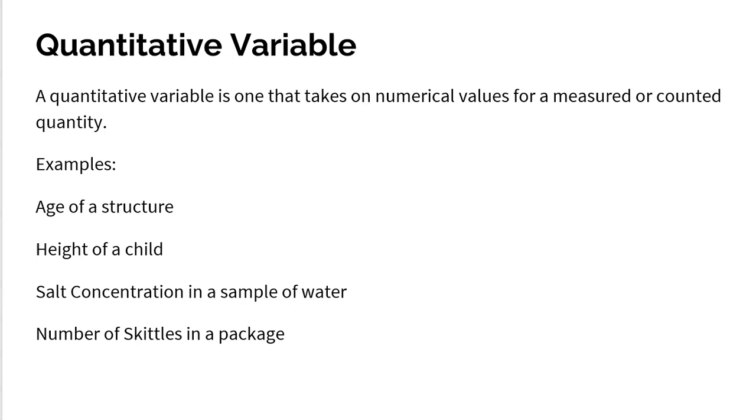Also thinking about the number of, for example, the number of Skittles in a package. How many Skittles are in that package? Oh, 52 Skittles. So we wouldn't normally think of Skittles as a unit of measurement, but if that's what it is, that's what it is. So really Skittles could be a unit of measurement. That bag has 52 Skittles. That bag has 16 Skittles. That bag has 51 Skittles. And if we have a whole bunch of bags, we could take all those number of Skittles and get an average number of Skittles.